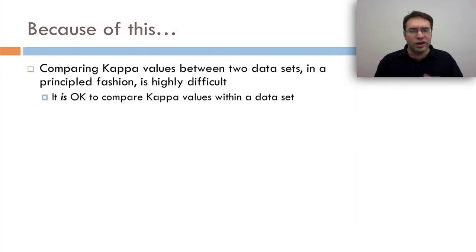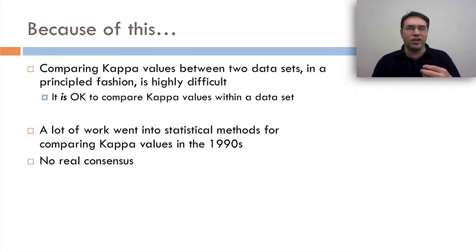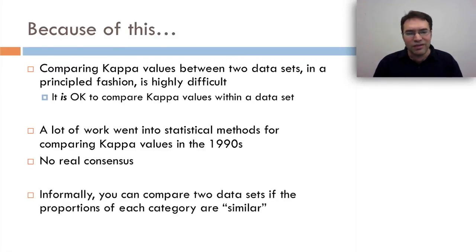Because of this, comparing kappa values between two data sets in a principled fashion is difficult. It is okay to compare kappa values within a data set. A lot of work went into statistical methods for comparing kappa values in the 1990s, but that work was mostly pretty inconclusive. And what it looks like is it's just hard. There's no real consensus about it. So comparing kappa values between data sets or saying 0.6 or 0.8 is magic kappa and you've got to be better than that, well, it kind of ignores what kappa is. Informally you can kind of compare two data sets if the proportions of each category are similar, but it's really something to think about carefully.